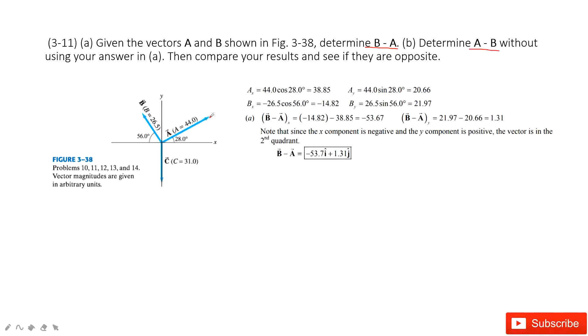So for A, we project it in x-component and y-component. A cosine theta is A_x, and A sine theta is A_y.